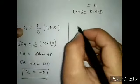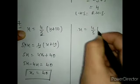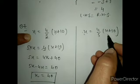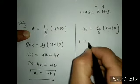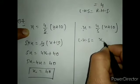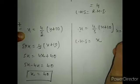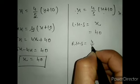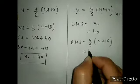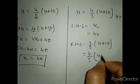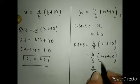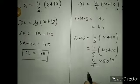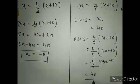We will check the value. Given: x equals 4/5 times (x plus 10), and x equals 40. Left hand side is simply x, so LHS equals 40. Right hand side: 4/5 times (40 plus 10) equals 4/5 times 50. 50 divided by 5 is 10, and 10 times 4 is 40. So right hand side also equals 40 — left hand side equals right hand side, verified.